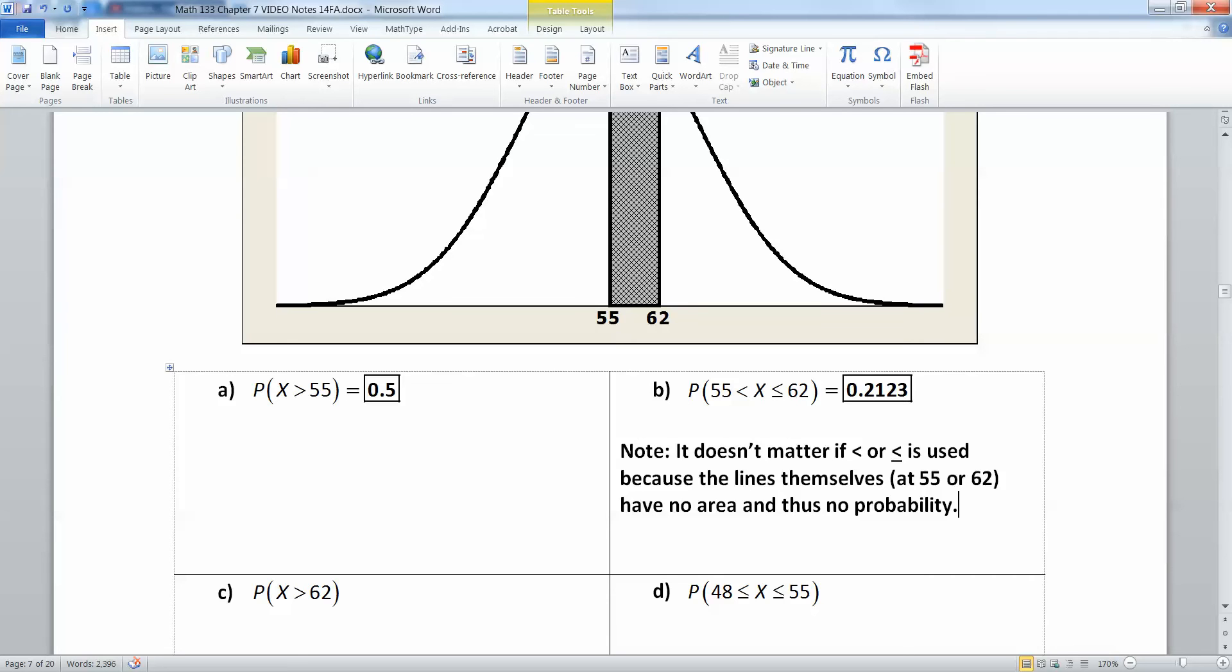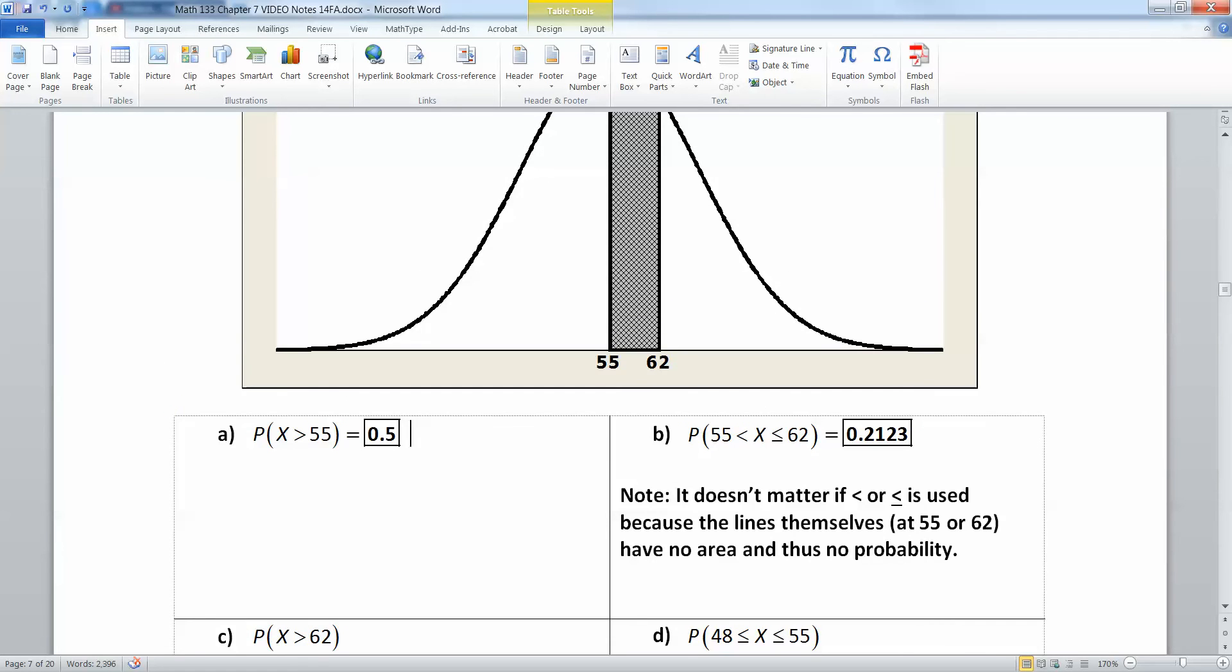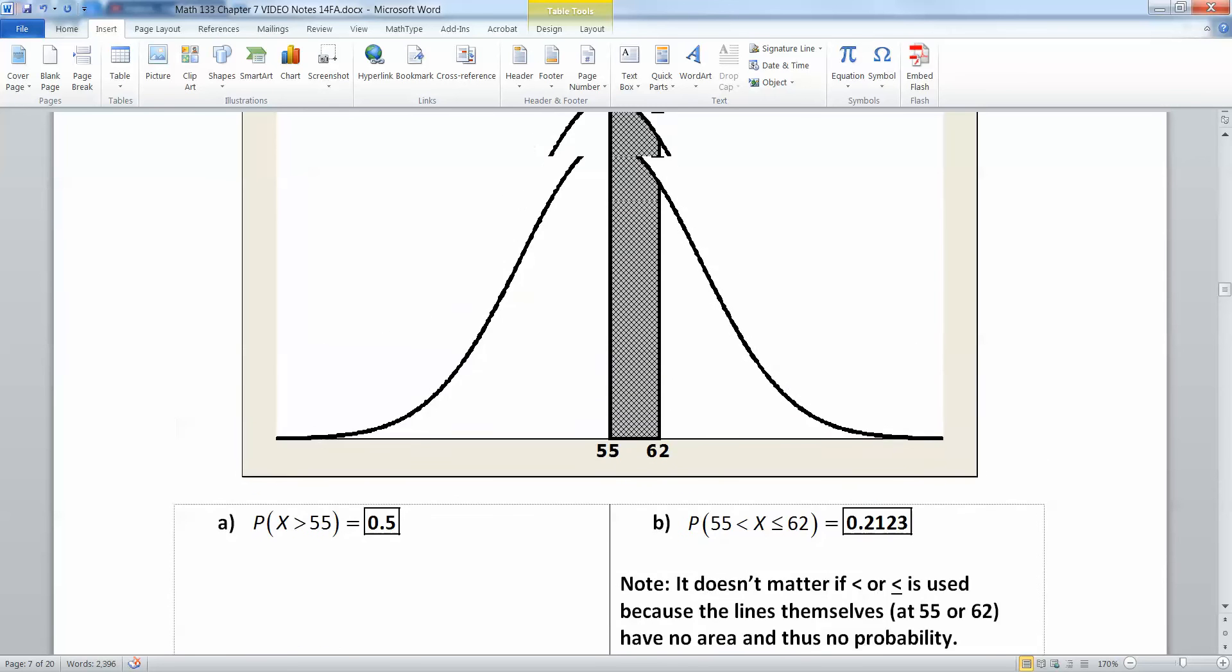Now let's get crafty. What about the probability that X is greater than 62? Well greater than 62 is this white region over here on the right hand side. Remember you know that 55 all the way to the end is 0.5.